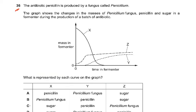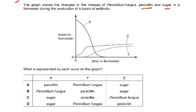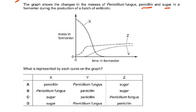Question 36: The antibiotic penicillin is produced by a fungus called Penicillium. The graph shows changes in the masses of fungus, penicillin, and sugar in a fermenter. X must be the sugar — it finishes first. Z is the fungus, which grows first. Y is the penicillin, which starts increasing later when the food finishes. The answer is C. The sugar decreases, the fungus mass becomes constant, and penicillin keeps increasing.